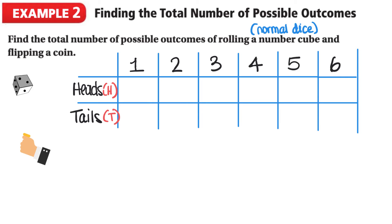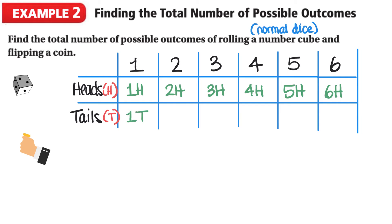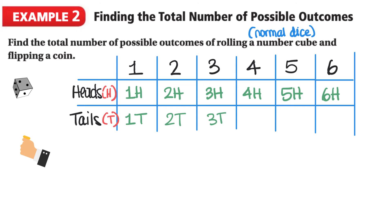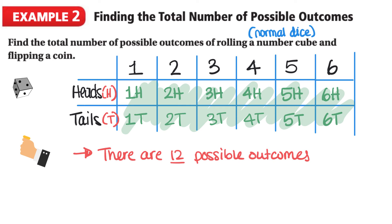Now inside the table, we're going to write 1H, and that represents that we rolled a one and the coin flipped to heads. Then we continue: 2H, 3H, 4H, 5H, and 6H. And then 1T, 2T, 3T, 4T, 5T, and finally 6T. In this table, we can see that there are twelve possible outcomes, and all of the outcomes are found inside the table.